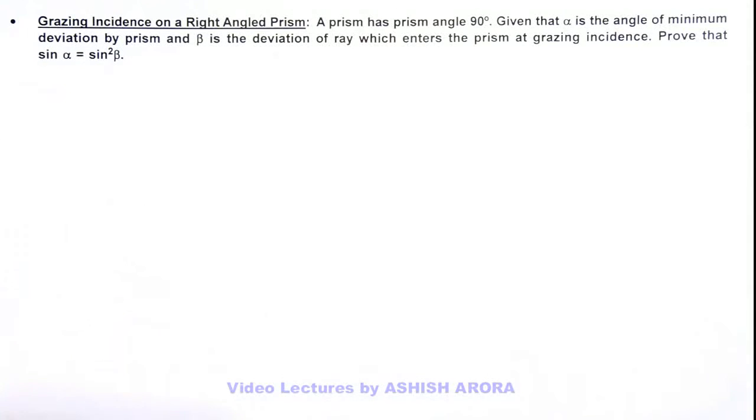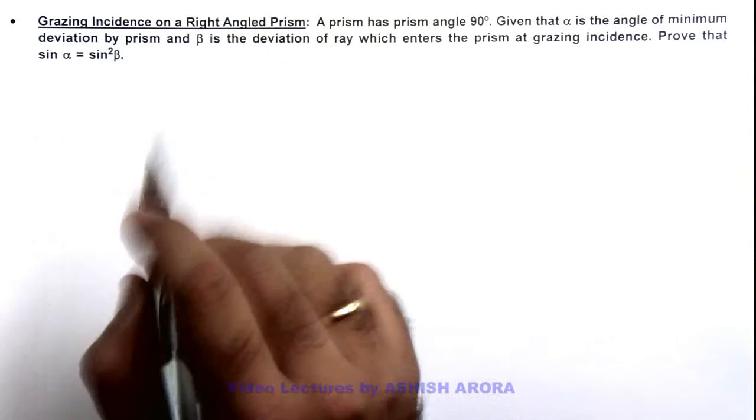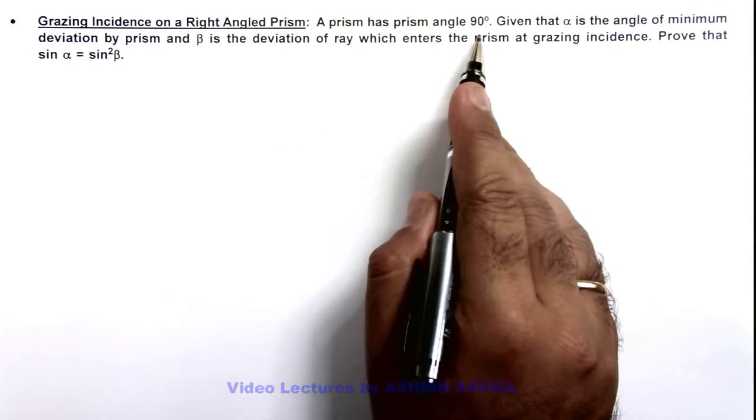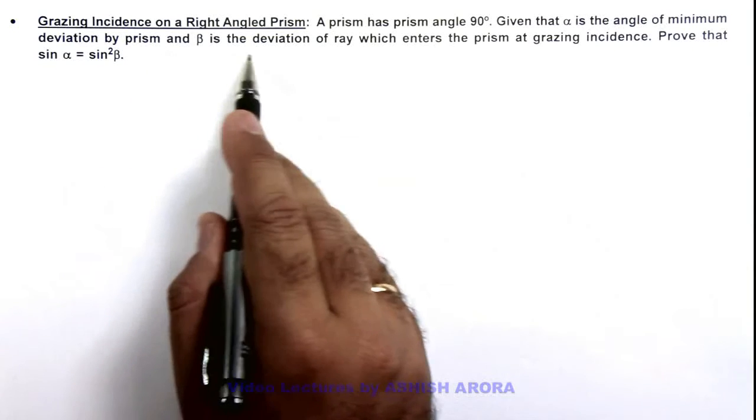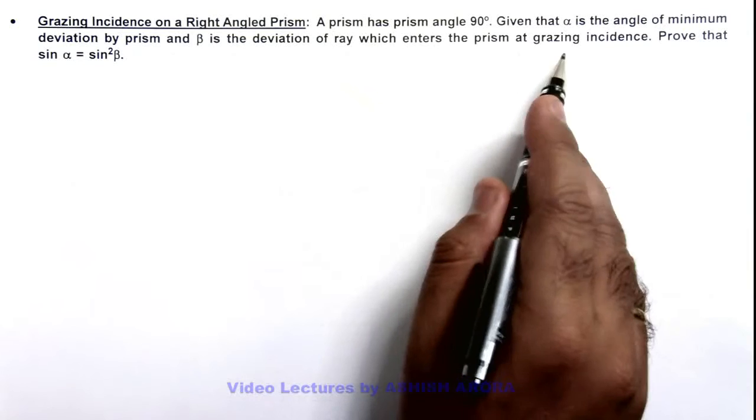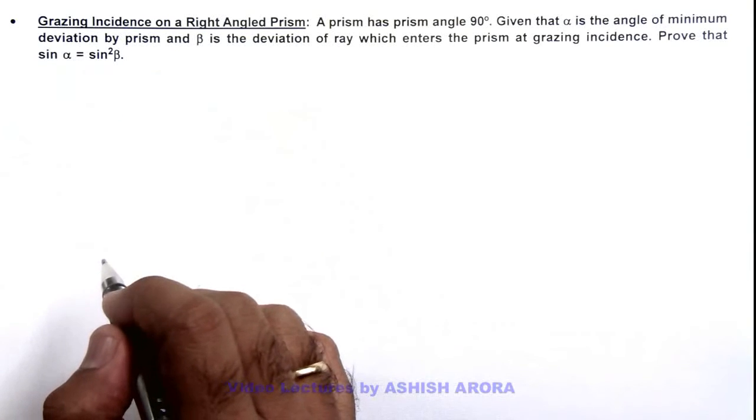In this illustration we'll demonstrate a situation of grazing incidence on a right angle prism. We are given that a prism has prism angle 90 degrees, and alpha is the angle of minimum deviation by prism and beta is the deviation of light ray which enters the prism at grazing incidence. Here we are required to prove that sin alpha is equal to sin squared beta.